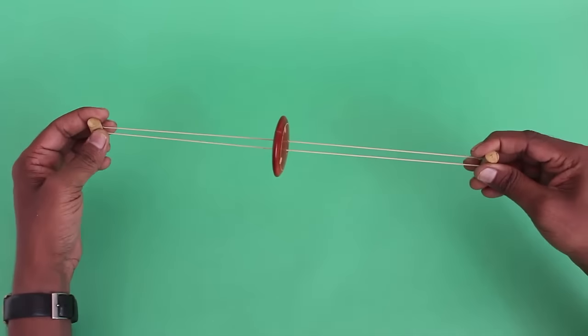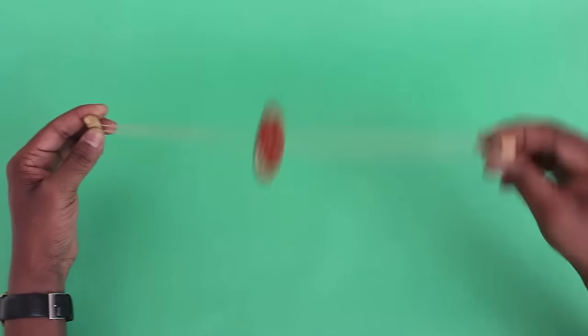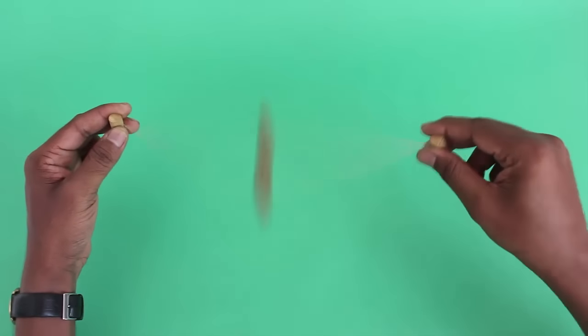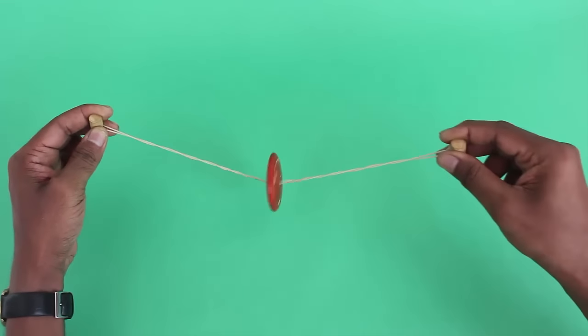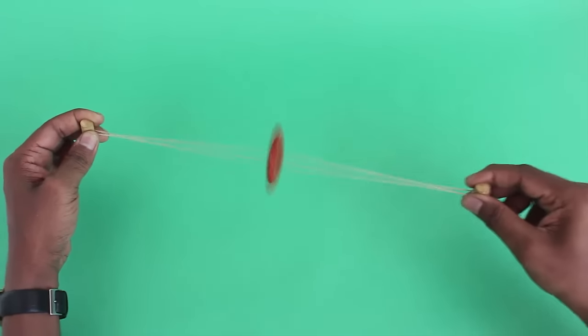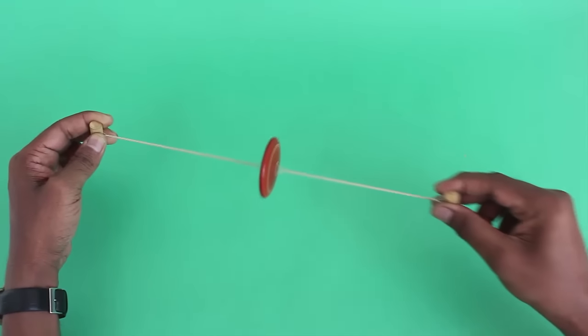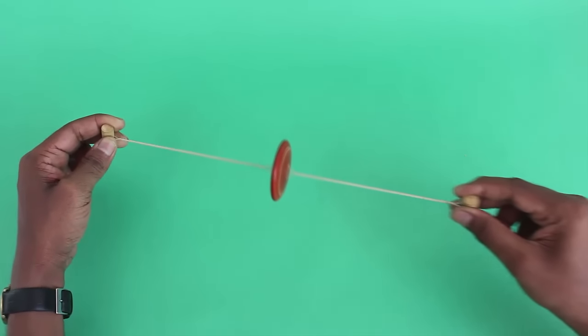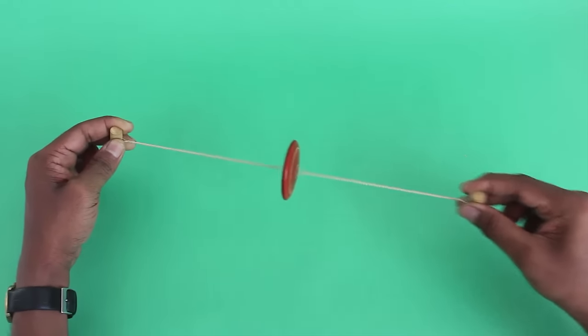Then the ends of the loops are held between the thumbs of both hands. The wooden disc is then spun round and round to enable the strings to gather some twists. Then the strings are pulled and released alternately. This spins the disc very fast.